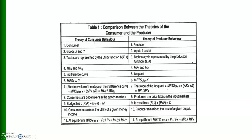The isocost line equation is C = w·L + r·K, where C is total cost, w is the wage rate (price of labor), and r is the rate of interest (price of capital). The consumer maximizes utility for a given budget or income, whereas the producer minimizes cost for a given output, or maximizes output for a given cost.